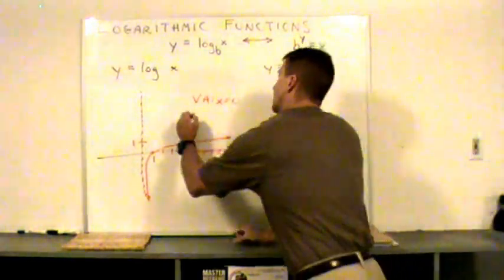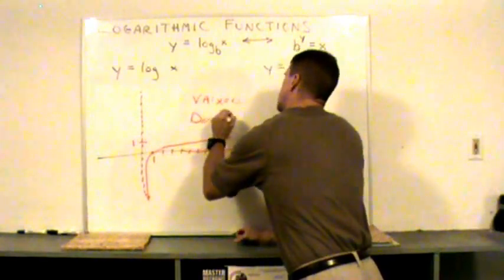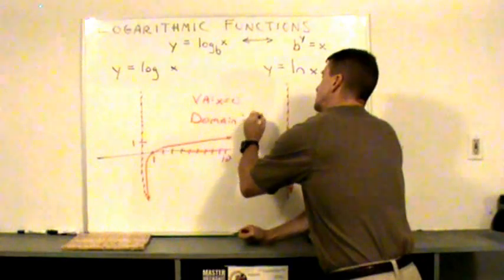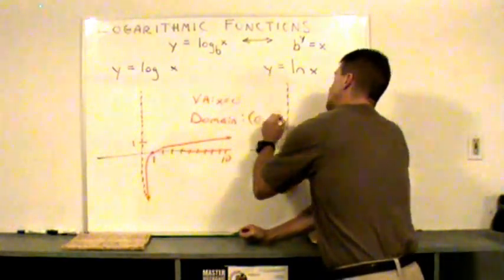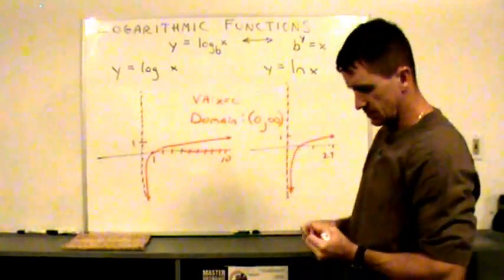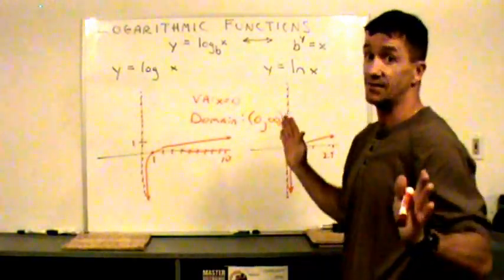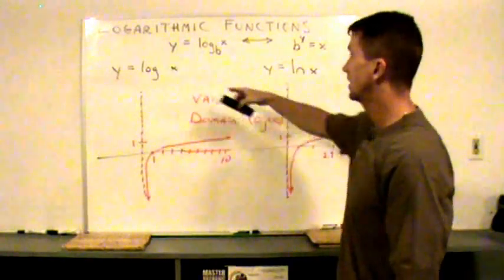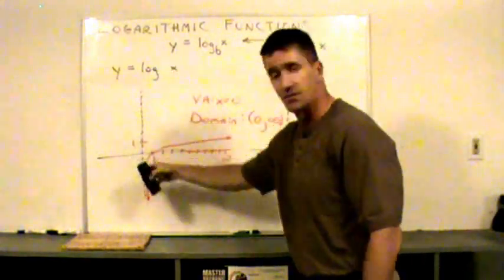And the domain, everyone, of both of these functions, based off this vertical asymptote, is from zero to infinity. Notice, I didn't close that bracket, because it never really reaches there. That means the log of zero is undefined. Yes, ln of zero is undefined, log of zero is undefined. We have a vertical asymptote there.